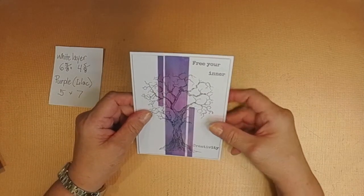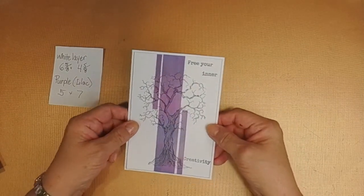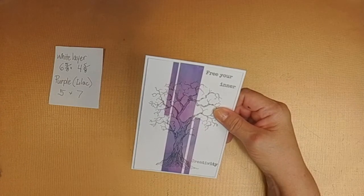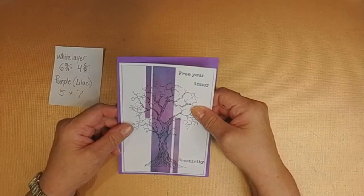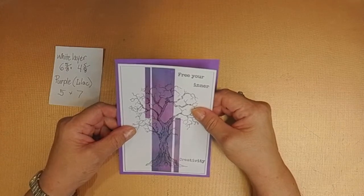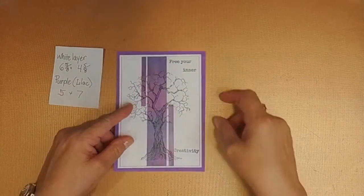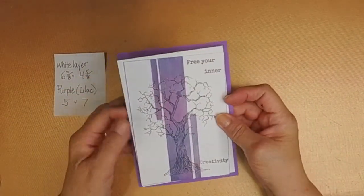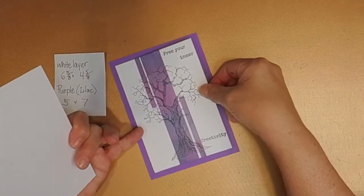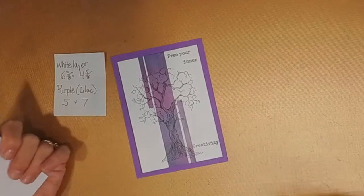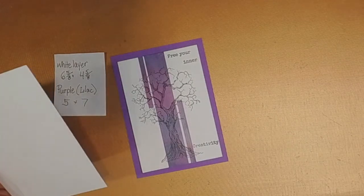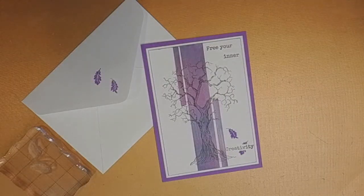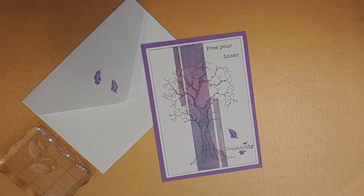The white layer is layering weight, six and five-eighths by four and five-eighths inches. And as you can see, when I put the main canvas over it, you can see the purple line I made. The purple piece, which is going to be the base of the card, is actually five by seven inches, which is going to end up to be an A7 size card. If you choose to not use a white and just put the main canvas over the lilac or purple paper, it's really not going to be necessary then to use marker along the edges of the paper.